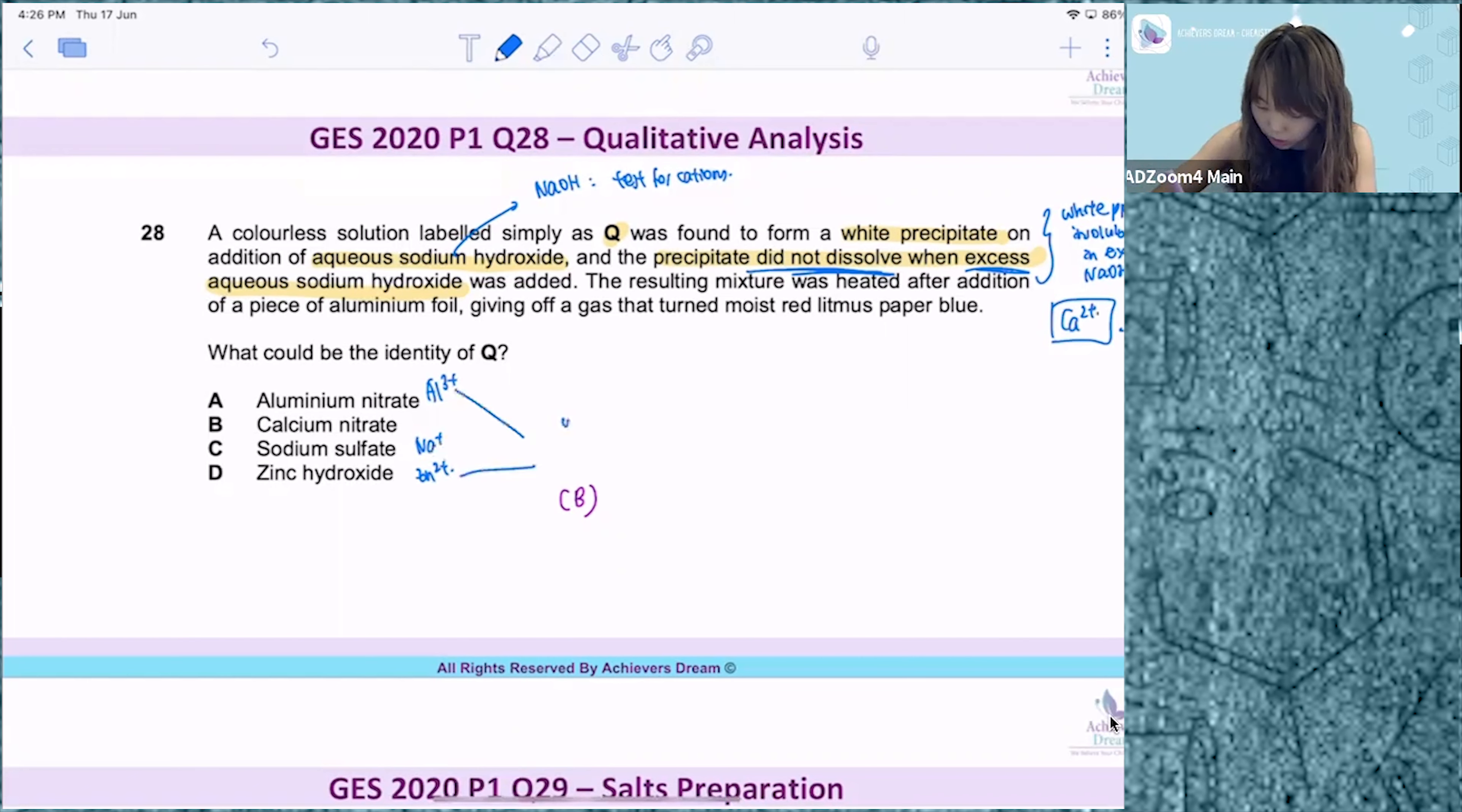For Al3+ and Zn2+, you will get a white PPT that is soluble in excess NaOH to form a colorless solution. For Na+, you won't even form any precipitate.